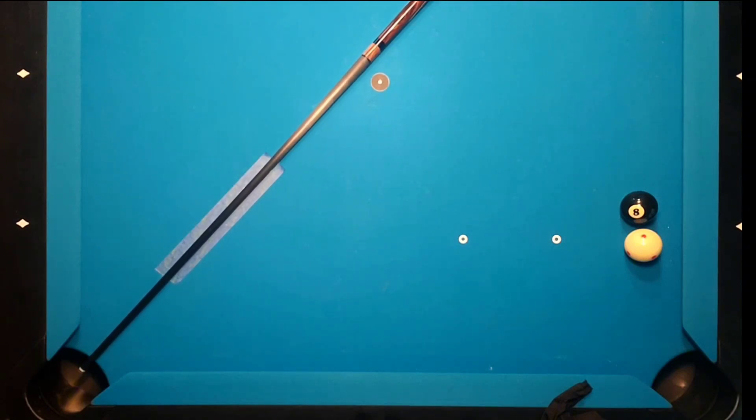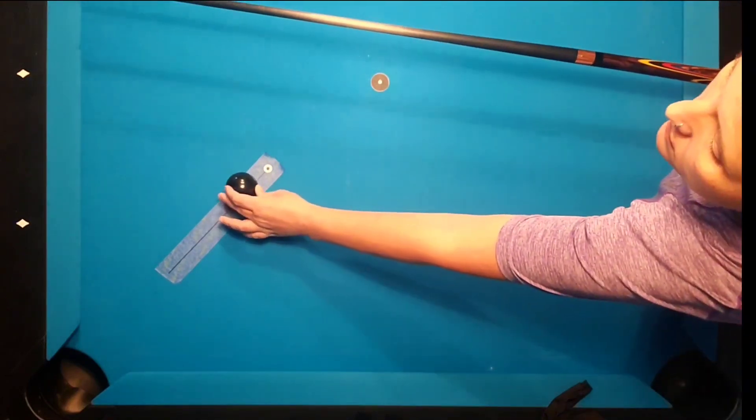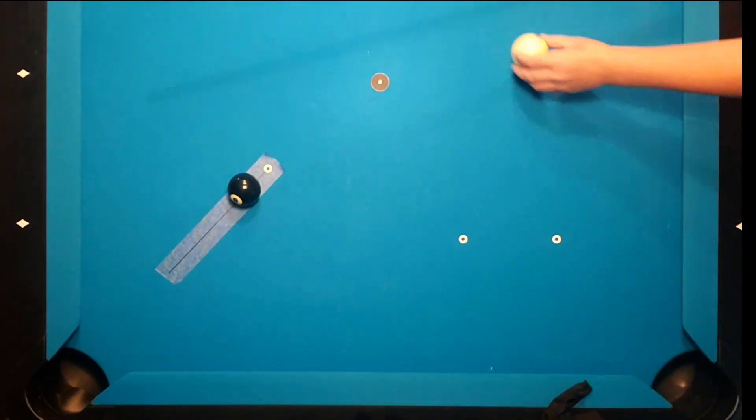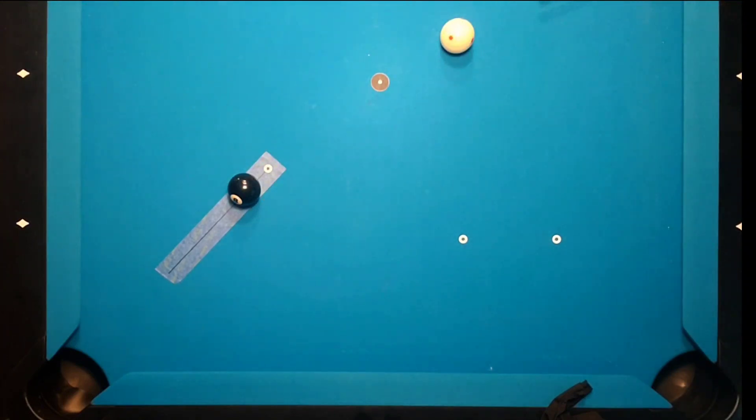Then place an object ball on the dot on the aiming aid closest to the pocket. Place the cue ball on the table, giving yourself a fairly easy shot. Then aim the center of the cue ball to the center of the dot on the back of the aiming aid. Hit the ball with a nice smooth stroke. If the aiming aid is set up correctly and you aimed accurately, the ball should go down the center of the pocket.